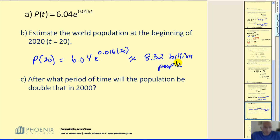Okay, and the last question. After what period of time will the population double that in the year 2000? So remember the shortcut. To find the doubling time, we can simply take natural log 2 and divide by k.